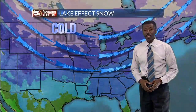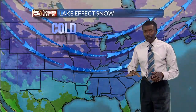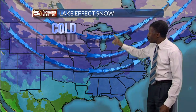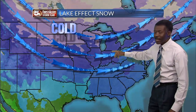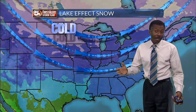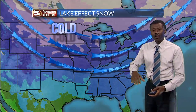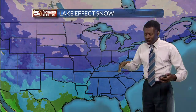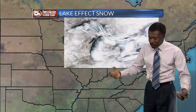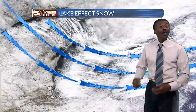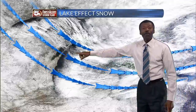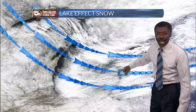Air that could be in the 20s, teens, or single digits blows over the lakes, which are typically in the 40s, maybe even low 50s. The point is, the water is above freezing, and all that very cold air sucks up the moisture very quickly, creates clouds, and blows the clouds downwind.